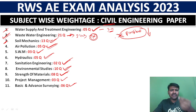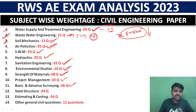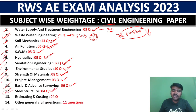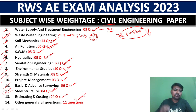Steel structures has around 4 questions, and these are direct questions. Estimating and costing has 4 questions, and other general civil questions add up to around 10 questions in that category.